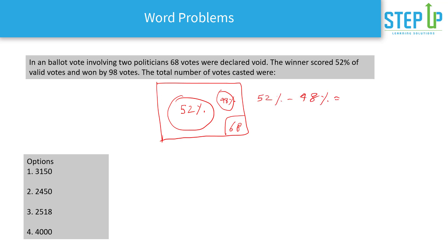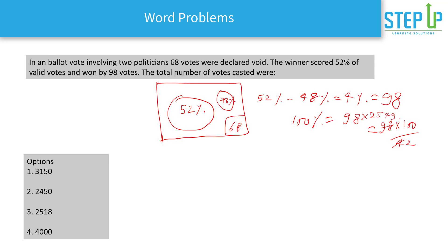So 4% of valid votes equals 98. To find 100% (total valid votes): 98 divided by 4, multiplied by 100, equals 2450. But the question asks for total votes cast, which includes the 68 void votes. So total votes = 2450 + 68 = 2518.